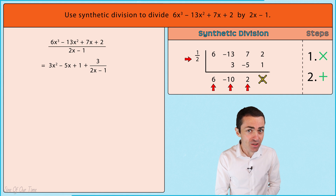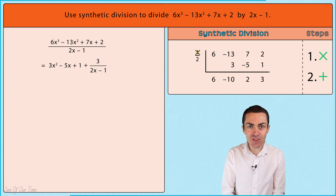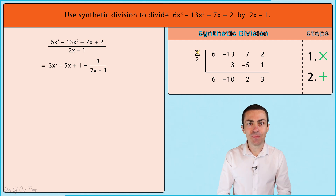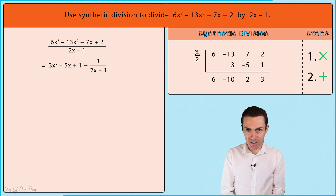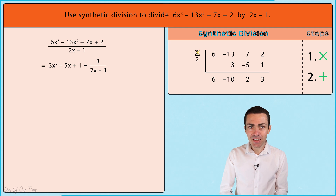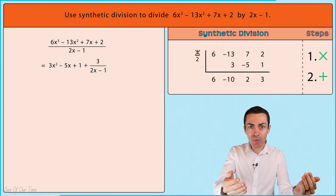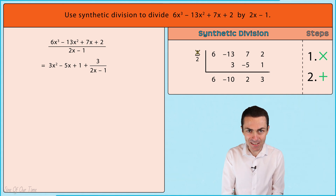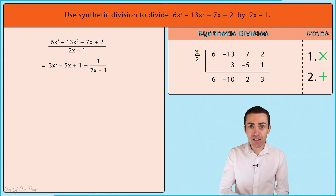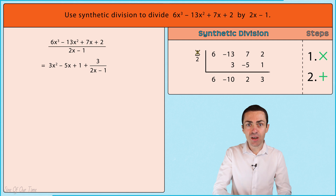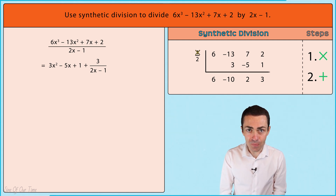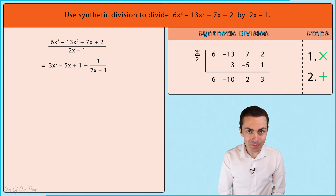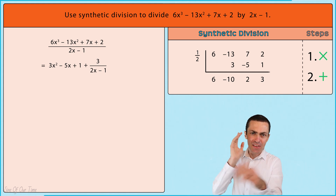We only divide by the number at the bottom of the fraction and ignore whatever number appears at the top. So we take 6 and divide by 2 to get 3 — the coefficient of x². Then negative 10 divided by 2 gives us negative 5 — the coefficient of x. Finally, 2 divided by 2 gives us 1 — the constant term. We do not need to do anything to the remainder.